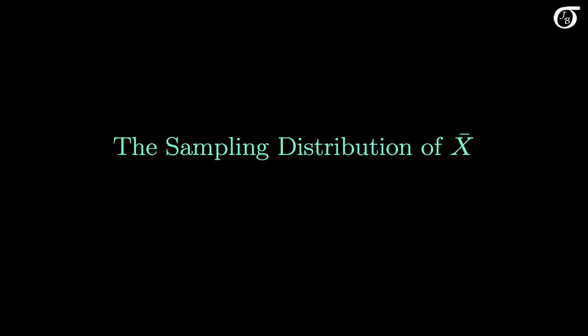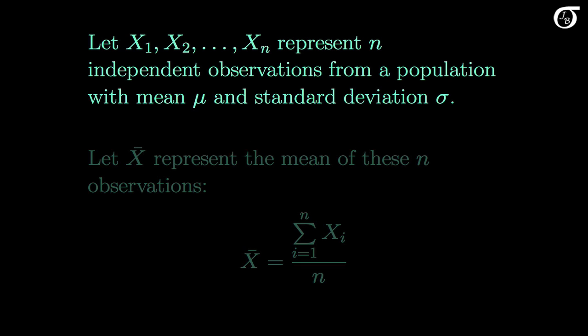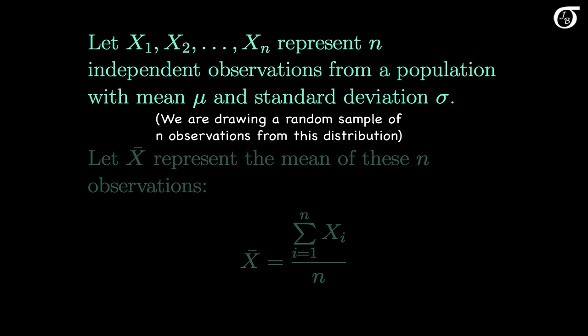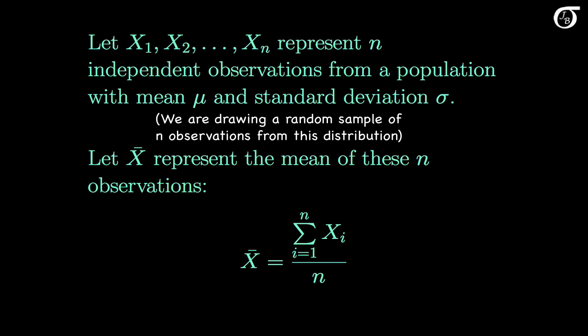Let's talk about the sampling distribution of the sample mean X bar. We're going to let X1 through Xn represent n independent observations from a population with mean mu and standard deviation sigma. In simpler terms, we're drawing a random sample of n observations from this distribution. We're going to let X bar represent the mean of these n observations. X bar is a sample statistic representing the mean of the sample. Before we draw our sample, we can think of X bar as a random variable.